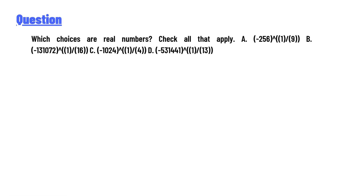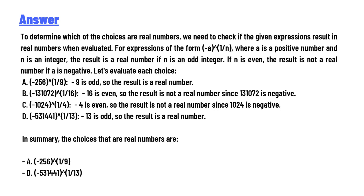Which choices are real numbers? Check all that apply. A: (-256)^(1/9), B: (-131072)^(1/16), C: (-1024)^(1/4), D: (-53144)^(1/13). We need to determine which of these choices are real numbers.